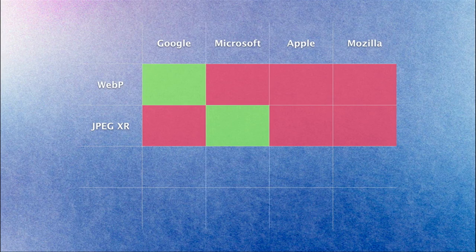Microsoft developed a JPEG extended-range format, which aims to be a very high-quality format for digital cameras that could potentially replace the raw format, but for web use cases the compression is not that impressive. Apple has been supporting JPEG 2000 for a while, but the format itself is as old as it seems and has failed to get significant traction.